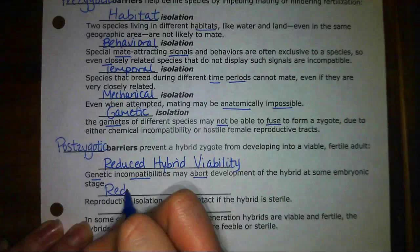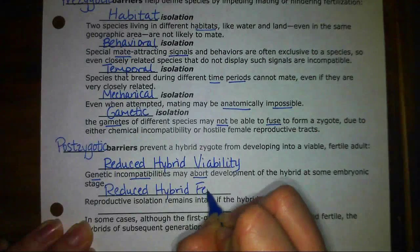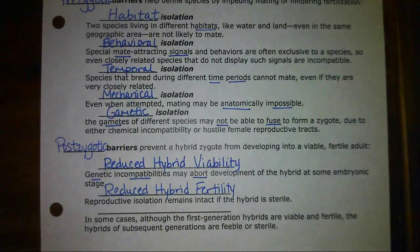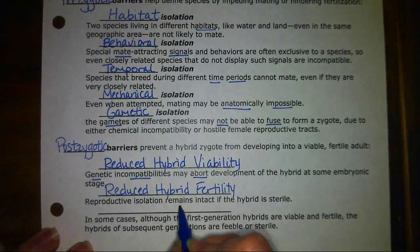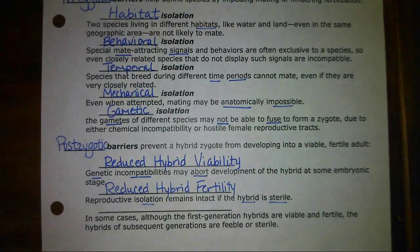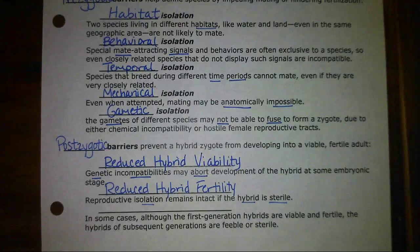The second postzygotic barrier is reduced hybrid fertility. Fertility means that the actual offspring can produce more offspring and keep the species going. Two organisms remain reproductively isolated if the hybrid is sterile. That was my earlier example: a horse and a donkey can mate and produce a viable offspring — the mule — but that offspring is infertile and cannot produce more offspring. Therefore those two original species are still considered separate species, still reproductively isolated from one another.